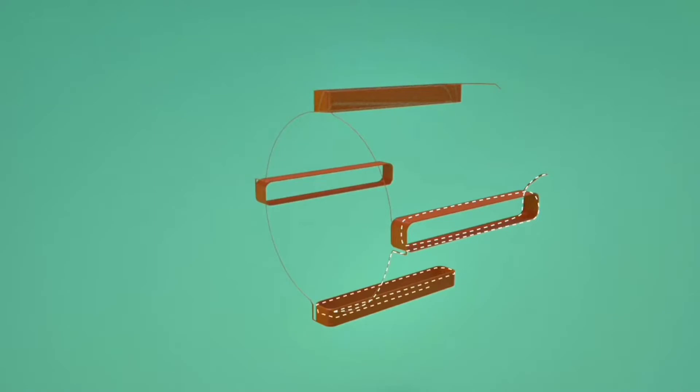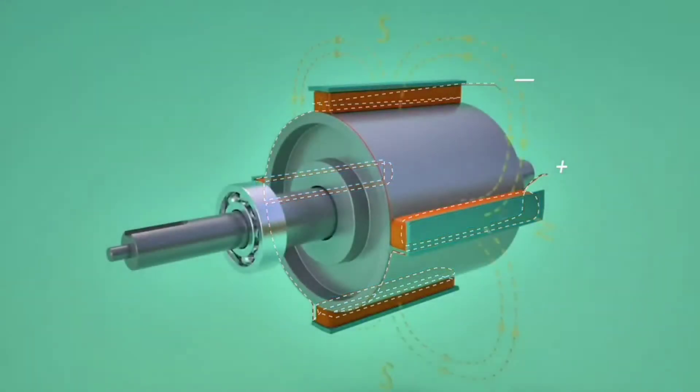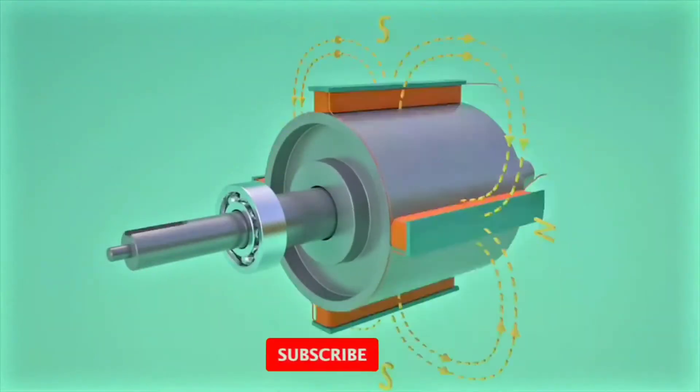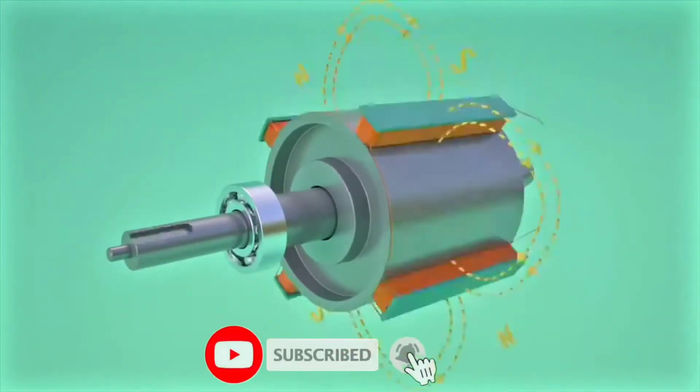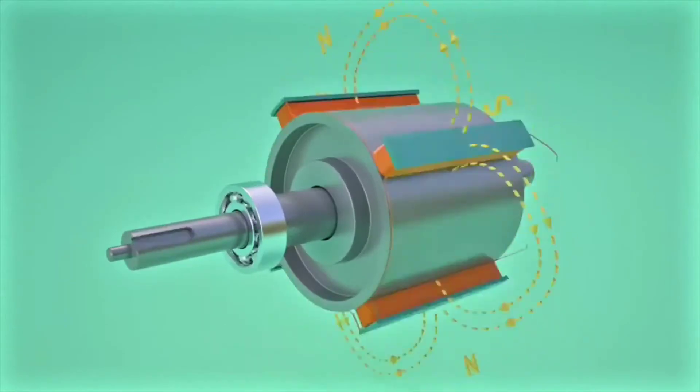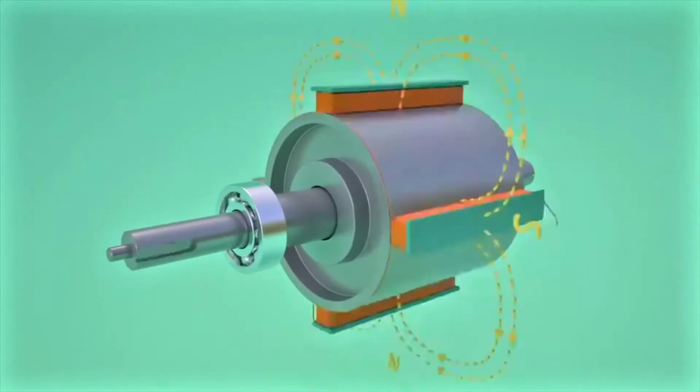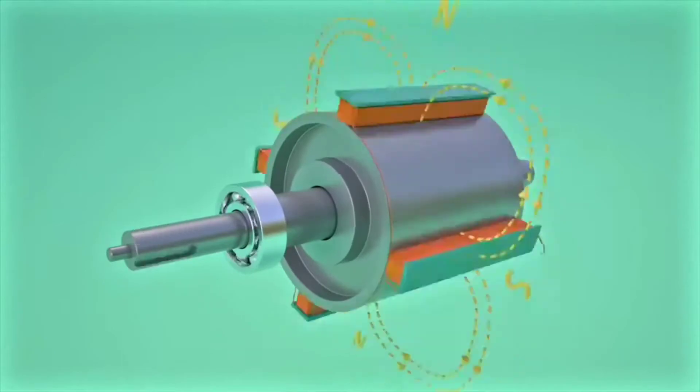Rotor coils are excited with a DC power source. Magnetic field produced around it would be as shown. The rotor is made to rotate using the shaft. This makes the rotor flux also rotate along with it.